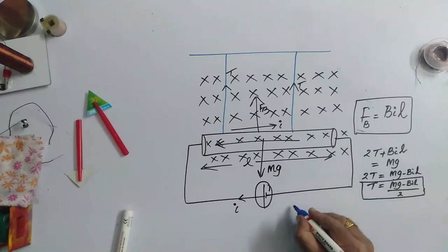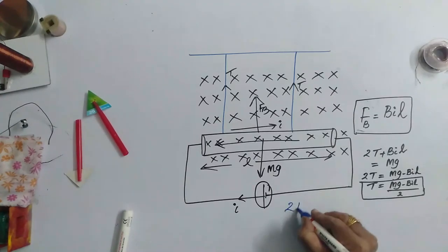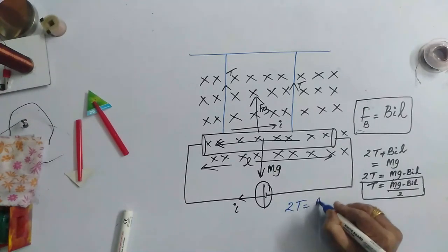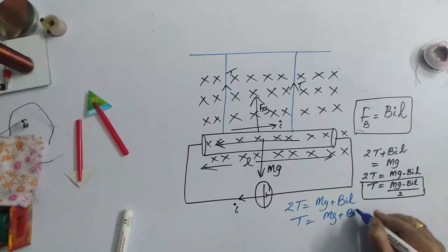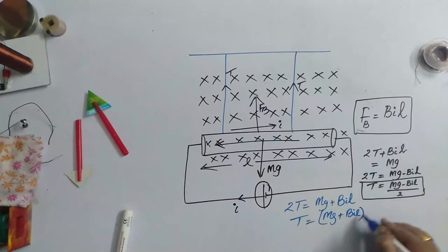Now, in that case, what I can write? 2T must be balancing both M G and B I L. Therefore, T is equal to M G plus B I L by 2.